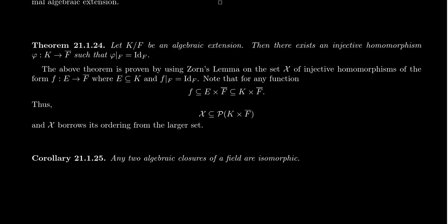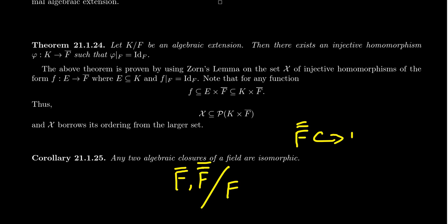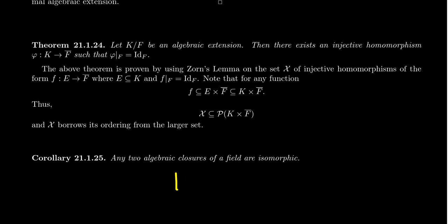If you have two different algebraic closures — call them F-bar and F-double-bar — both are algebraic extensions of F and both are maximal. The previous theorem implies F-double-bar can be embedded inside F-bar, and F-bar can be embedded inside F-double-bar. From these injective field homomorphisms we can infer they must in fact be isomorphisms, since algebraic extensions are maximal for algebraically closed fields. So the corollary — that algebraic closures are isomorphic — follows very nicely. The proof of this theorem is left as an exercise.